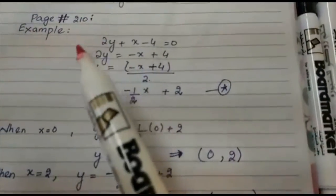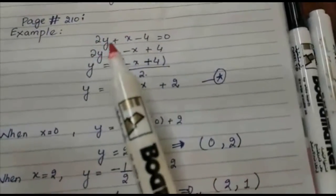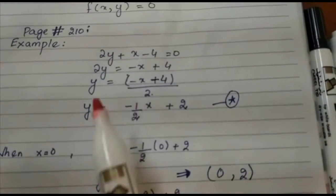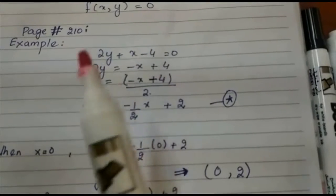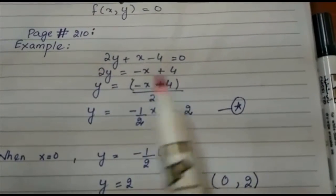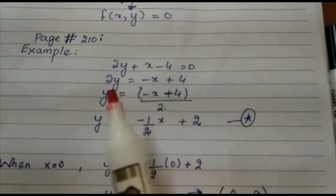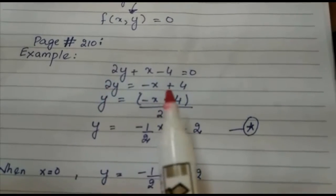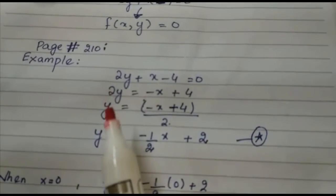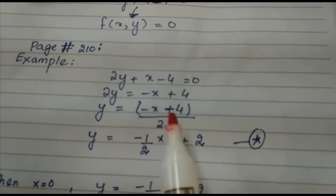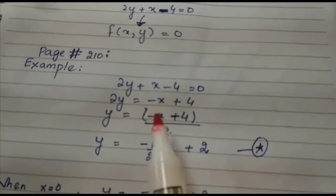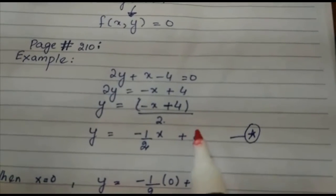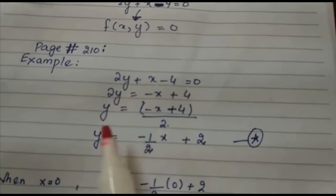Now go to page number 210 where there is an example in implicit form: 2y + x - 4 = 0. First make it explicit. Rearrange: 2y = -x + 4, then divide both sides by 2. You get y = -x/2 + 2, which is now an explicit function.